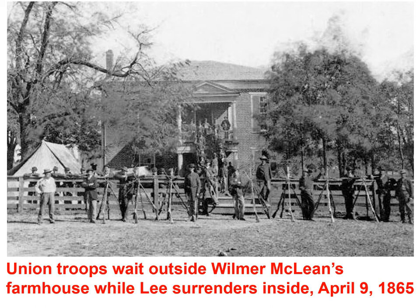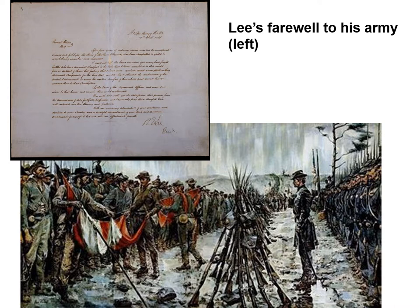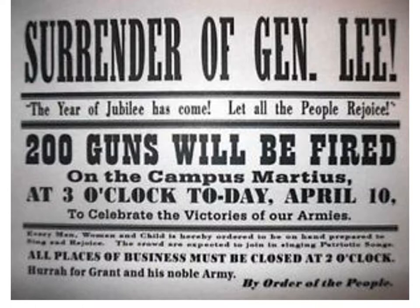Lee asked if his men were near starvation, and Grant even agreed to have some food delivered to them. Here are some Union troops waiting outside Wilmer McLean's farmhouse while Lee surrendered inside on April 9th, 1865. Lee returned to his army and bid them a farewell. When news of Lee's surrender reached Washington and the rest of the world by telegraph, there was a massive celebration. A notice announced 200 guns would be fired on the campus at three o'clock on April 10th. It was just a huge celebration in towns across the country.